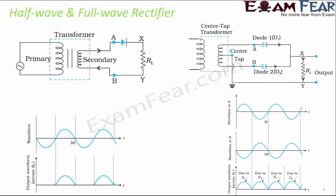One application of the P-N junction diode is the rectifier — a device that converts alternating current to direct current, or alternating voltage to direct voltage. There are two types: half-wave and full-wave rectifiers. In a half-wave rectifier, there is just one diode. During the positive cycle of the input signal, the diode is forward biased and allows current flow.